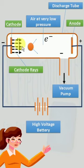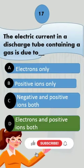Therefore, the correct answer is option D: electrons and positive ions both.